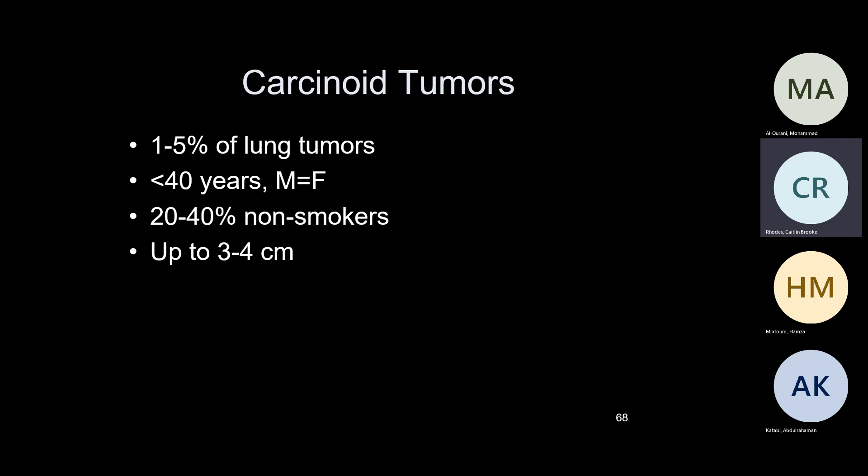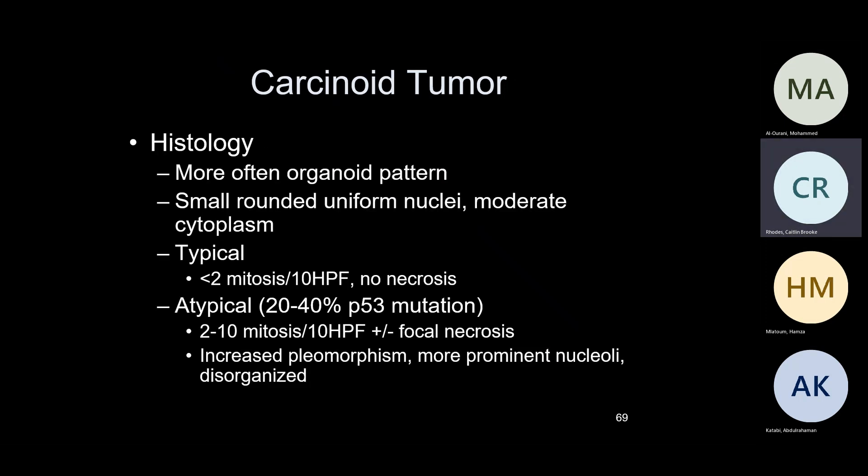Carcinoid tumor is in the lower spectrum of neuroendocrine tumors. These tumors arise from neuroendocrine cells — you have normal neuroendocrine cells in your airways. They represent 1-5% of lung tumors, often seen in younger patients, and a significant number of these patients are non-smokers. About 3-4 centimeters in size, organoid and trabecular growth pattern, rounded and uniform nuclei, moderate cytoplasm, typically no mitosis — less than 2 mitoses per 10 high-power fields — and no necrosis. Atypical carcinoid tumors have 10-40% P53 mutations, 2-10 mitoses per 10 high-power fields, and a little necrosis.